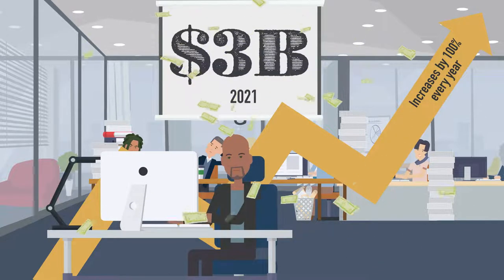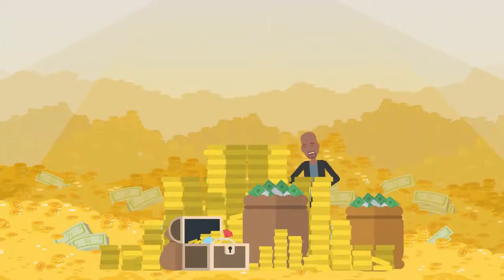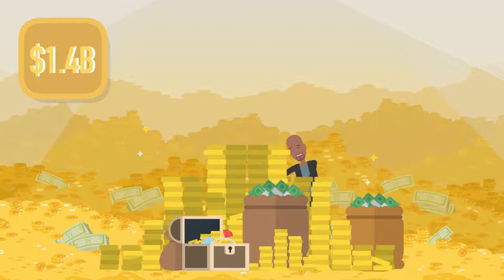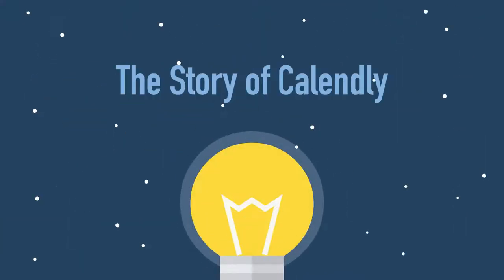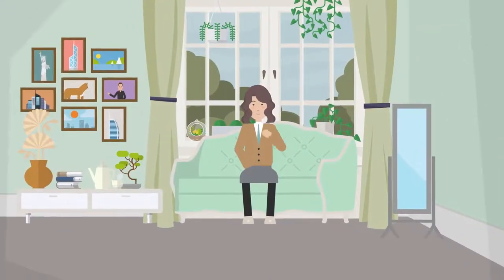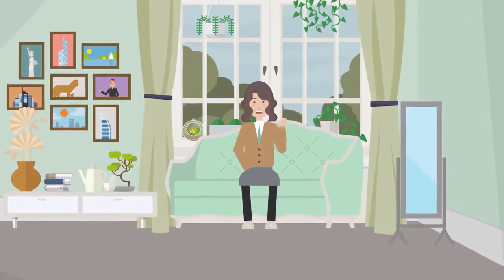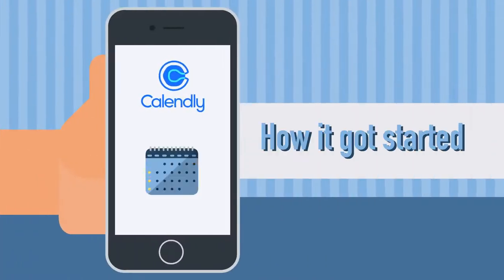And by owning a majority stake in the company, Calendly founder Tope Awotona amassed a fortune of at least $1.4 billion. So how did he do it? In today's video, let's talk about the story of Calendly. If you're thinking of starting your own tech company but don't know how to code, I'm sure you'll take inspiration from Awotona's story.